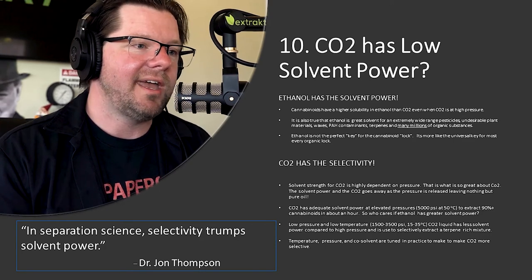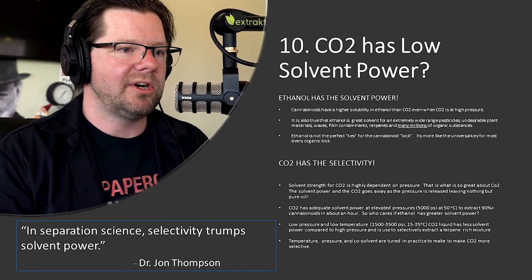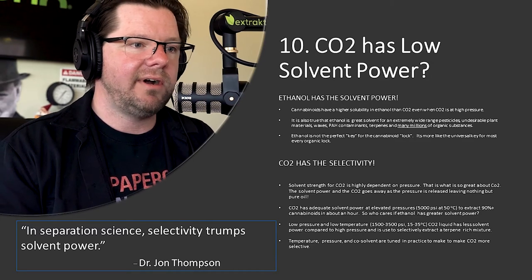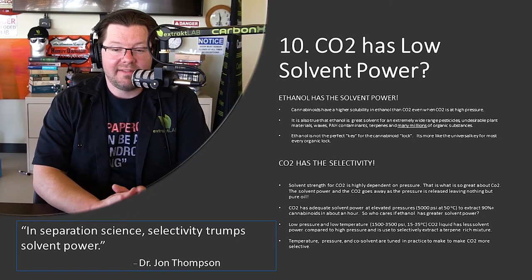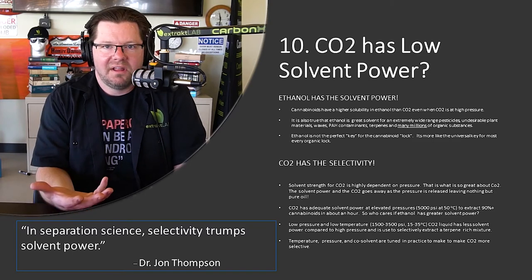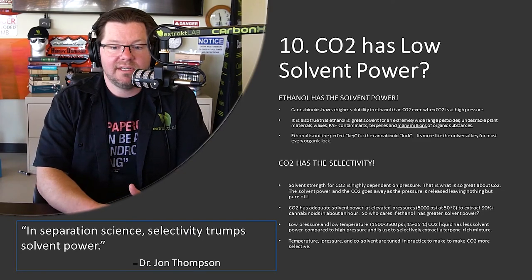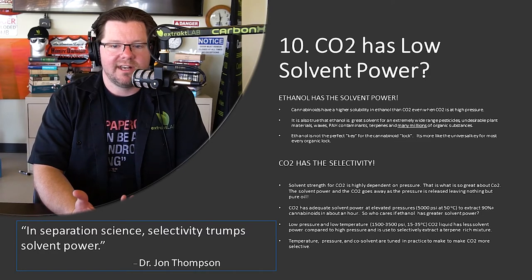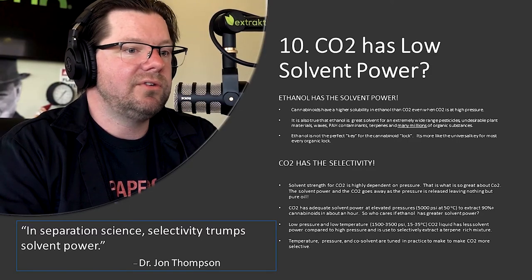CO2 has selectivity, and you talk about it in terms of pressure and temperature. Solvent strength for CO2 is highly dependent upon the pressure — that's what's so awesome about it. The solvent power goes away as the pressure is released, leaving nothing but pure oil. CO2 has adequate solvent power at elevated pressures of 5,000 psi at 50 degrees to extract 90% cannabinoids in about an hour. At low pressure and low temperature, CO2 has less solvent power and is used selectively to extract terpenes, making terpene soups and sauces — you can't do that with ethanol.